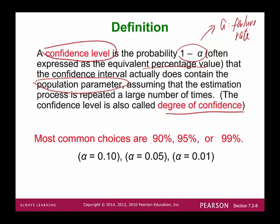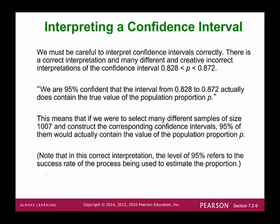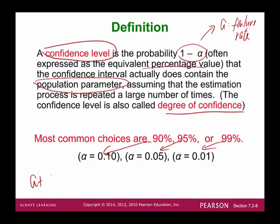For 90% confidence level, alpha equals 0.10. For 95% confidence level, alpha equals 0.05. For 99% confidence level, alpha equals 0.01. They are complements — if you sum up alpha and the confidence level, it becomes 1, or 100%.